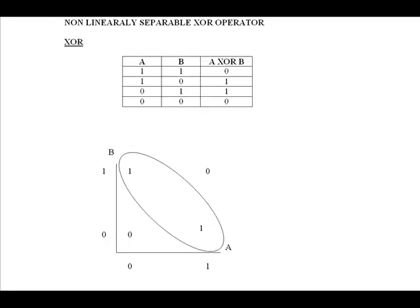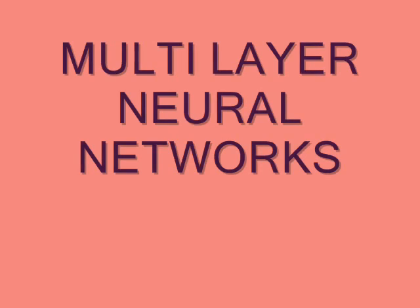On the other hand, the exclusive OR cannot have a straight line drawn between the possible outcomes. To deal with a situation where the outcomes are not linearly separable, a multi-layer neural network is required.